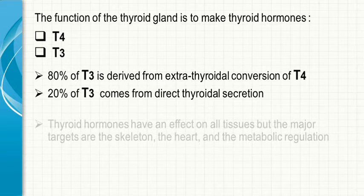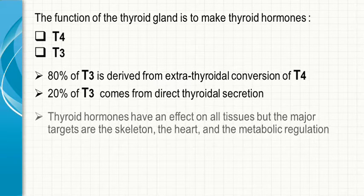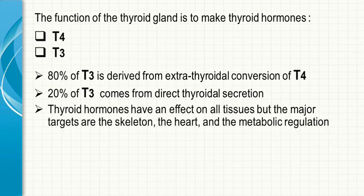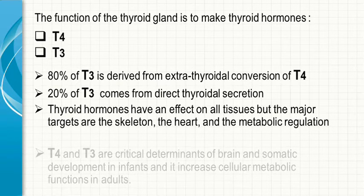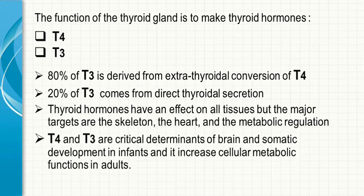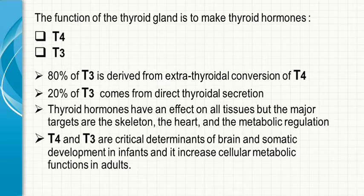The thyroid hormones have an effect on all tissues, but the major targets are the skeleton, the heart, and metabolic regulation. T4 and T3 are critical determinants of brain and somatic development in infants, and they increase cellular metabolic functions in adults.